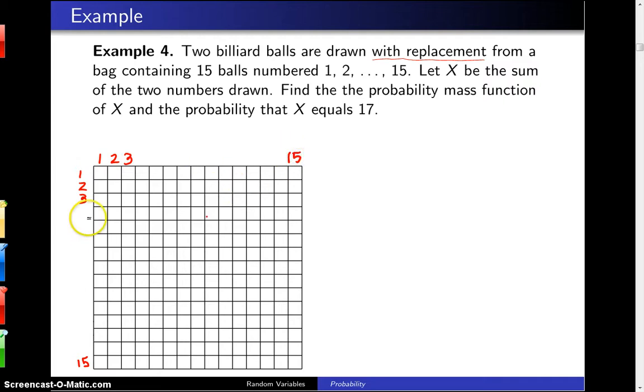So if you number these as the first draw here on the rows 1 through 15, and the second draw here again 1 through 15, then you know that there are 15 squared which is 225 equally likely outcomes that are given by the 225 little squares.